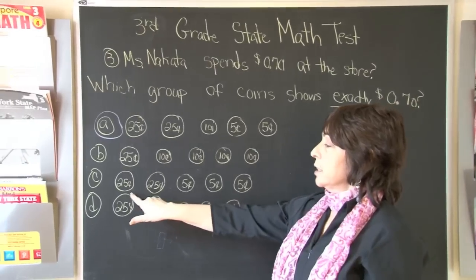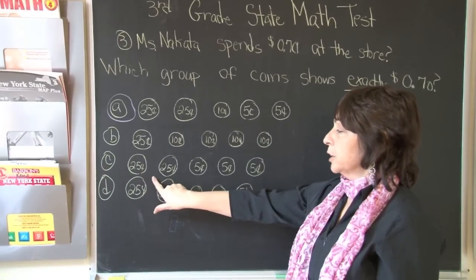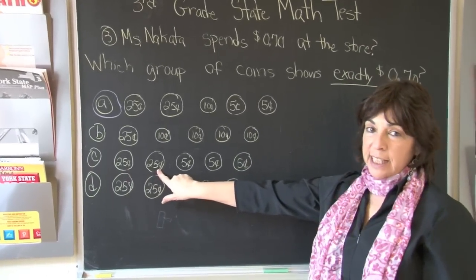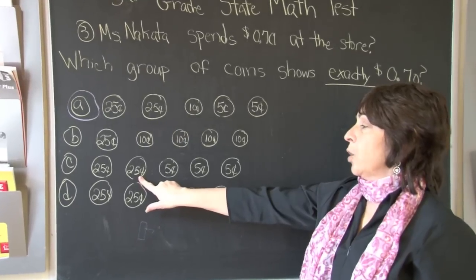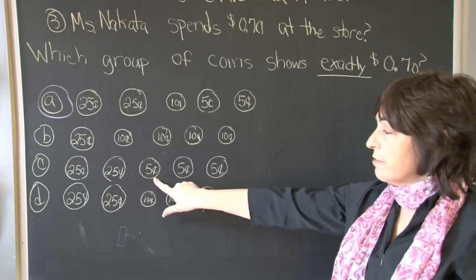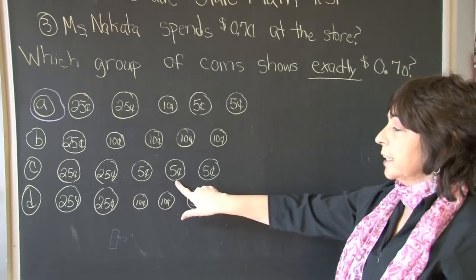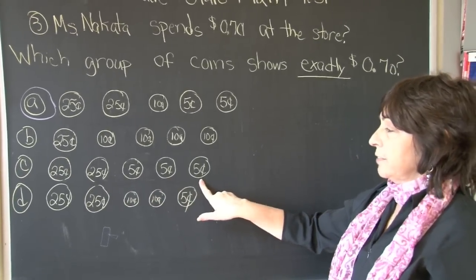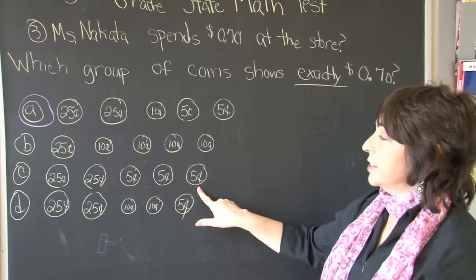Let's look at C. 25 cents plus 25 is 50 cents. Now we are adding only nickels. 50 plus 5 is 55. Plus 5 is 60. Plus 5 is 65. Again, we are 5 cents short.